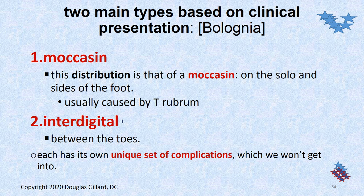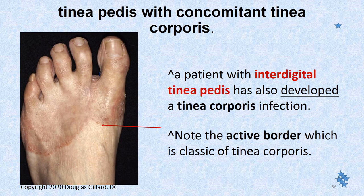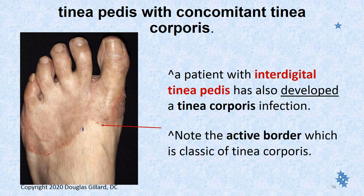The interdigital is the most common though. Here is a moccasin pattern of tinea pedis — you know what a moccasin looks like. Here's interdigital tinea pedis. And when it crawls up on the dorsum, we call that tinea manuum — if it's on the back or dorsum of the hand, that's tinea manuum. But this particular case is tinea corporis — this is considered part of the body here. So this patient has tinea corporis and interdigital tinea pedis.